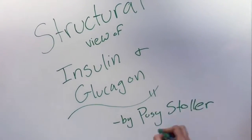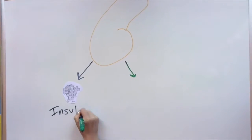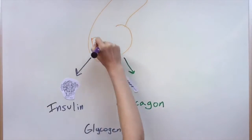Insulin and glucagon are two peptide hormones that are essential to the metabolism of glycogen. Both hormones are synthesized in the pancreas. Let's look at them in depth.